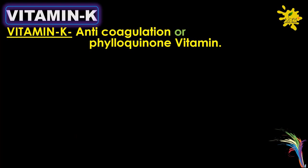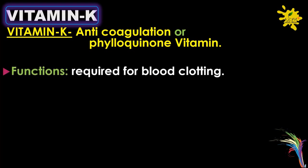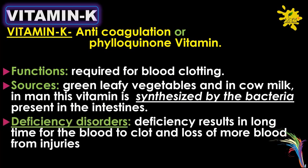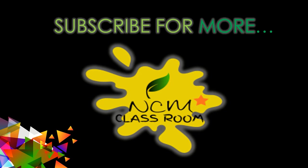Vitamin K: the chemical name is phylloquinone, also called anti-coagulation vitamin. It is required for blood clotting. Sources include green leafy vegetables and cow milk. In humans, this vitamin is synthesized by bacteria present in the intestines. Deficiency results in prolonged blood clotting time and loss of more blood from injuries.